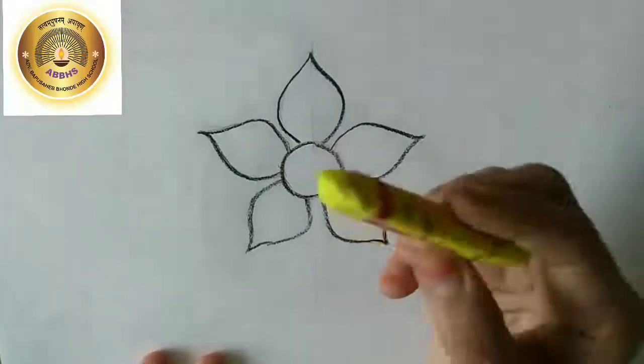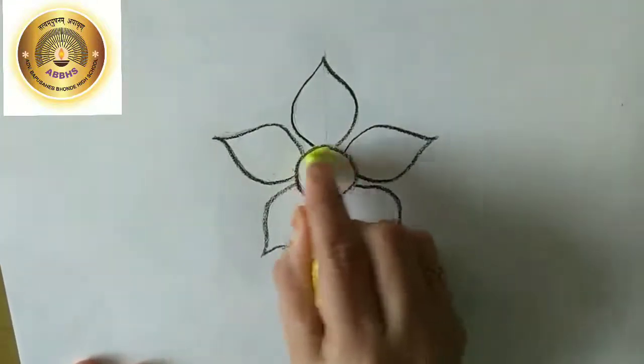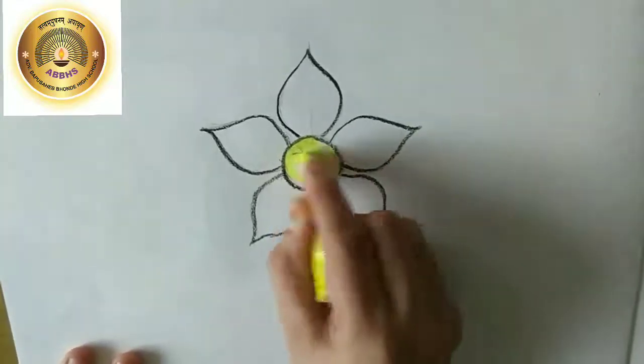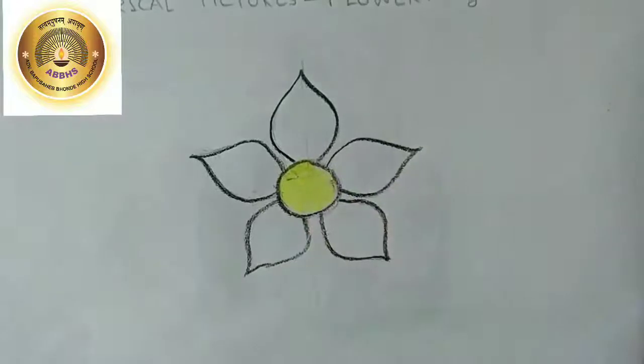Now, with a yellow colour, do the centre of the flower in one hand motion. First, do the edges and then the inner part in right and left motion.